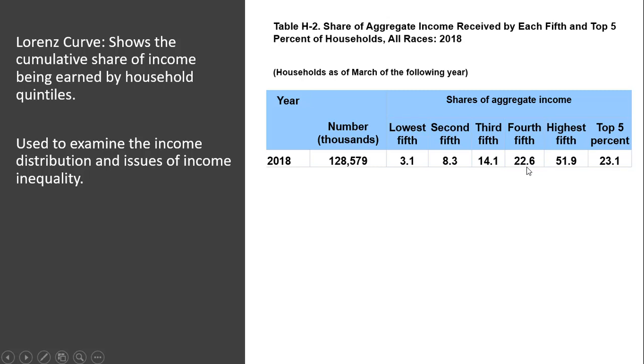The fourth fifth earned 22.6%. The highest fifth, highest 20% of the income distribution, earned 51.9%. And there's also here the top 5%.